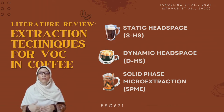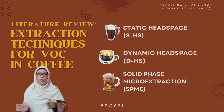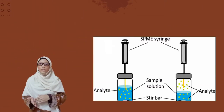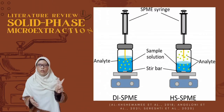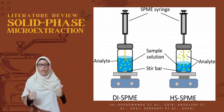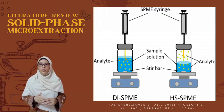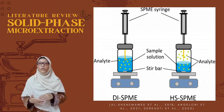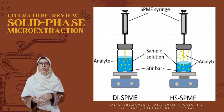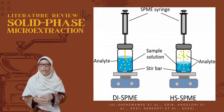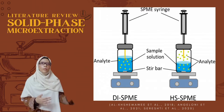SPME involves the exposure of a fiber to the sample for a certain period of time before it is introduced into the GC injector port. There are two types of SPME: direct immersion SPME and headspace SPME. The latter involves exposure of the fiber to the headspace of the sample. In this study, headspace SPME (HS-SPME) is chosen, given that direct immersion SPME (DI-SPME) is only applicable for liquid samples.